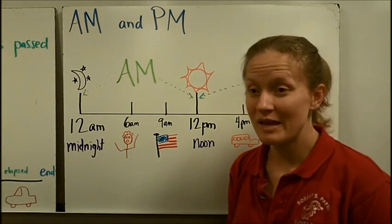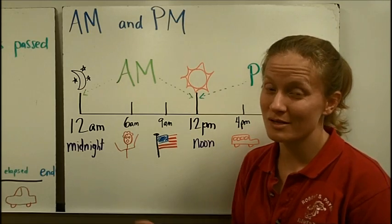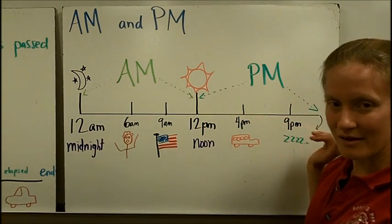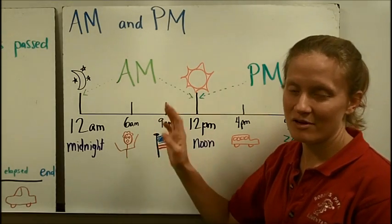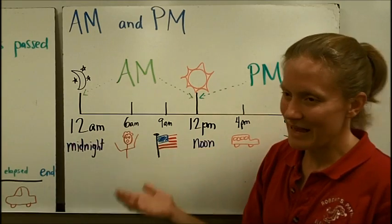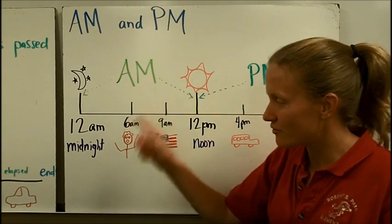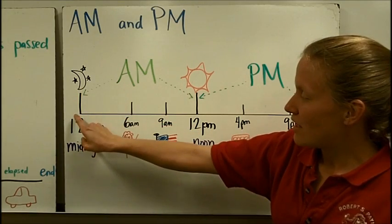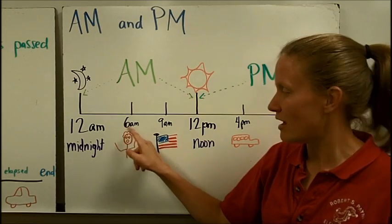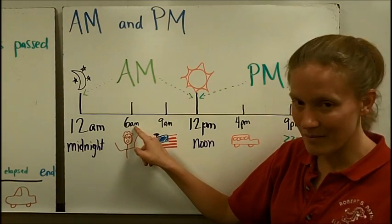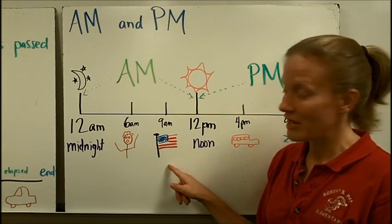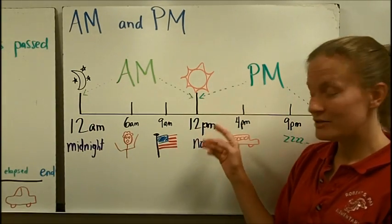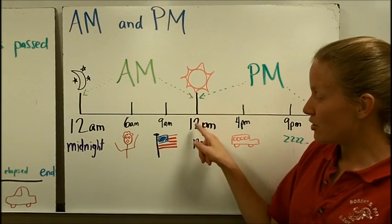Before we get into solving problems, let's talk about one thing that fourth graders commonly get confused about: the difference between a.m. and p.m. I've drawn a day timeline here to help pick out some of the most important times of the day. The calendar day starts at midnight — when it clicks over, it's 12 a.m., the middle of the night. Then around 6 or 7 o'clock you wake up — that's 6 a.m. Around 9 a.m. we are saying the pledge at school. Then 12 hours after midnight, we get to 12 p.m. and it clicks over into the afternoon.